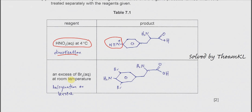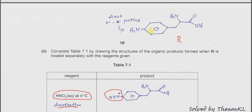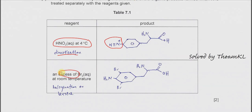Second reagent: R reacted with excess bromine. We have an amine group which has 2,4-directing ability. Counting the positions — 1, 2, 3, 4 — position 4 is already occupied, so bromination occurs at positions 2 and 6 only. With excess bromine, the halogenation (electrophilic substitution) occurs at both of these available positions.